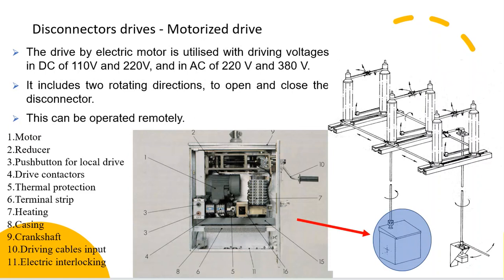The motorized drive uses electric motors with driving voltages in DC of 110 V and 220 V, and in AC of 220 V and 380 V. It includes two rotating directions to open and close the Disconnector. Components include: Motor, Reducer, Push Button for Local Drive, Drive Contactors, Thermal Protection, Terminal Strip, Heating, Casing, Crankshaft, Driving Cables Input, and Electric Interlocking. This drive can also be operated remotely.